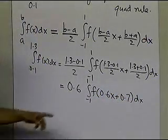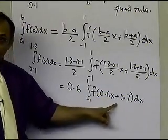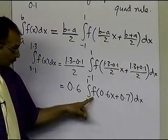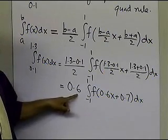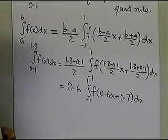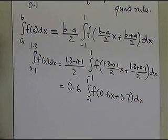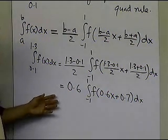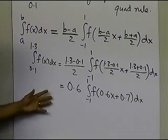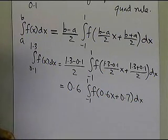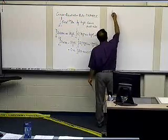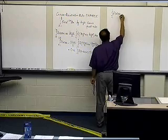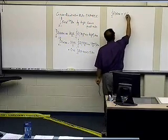It's very important to understand that 0.6x + 0.7 is the argument of the function at which you calculate the function values, and there is a multiplication factor of 0.6 which you should not forget when applying the Gauss quadrature rule. Now, what we have to do is write down the coefficients and arguments for the three-point Gauss quadrature rule.